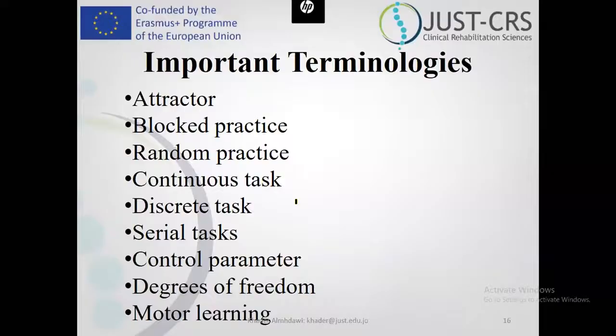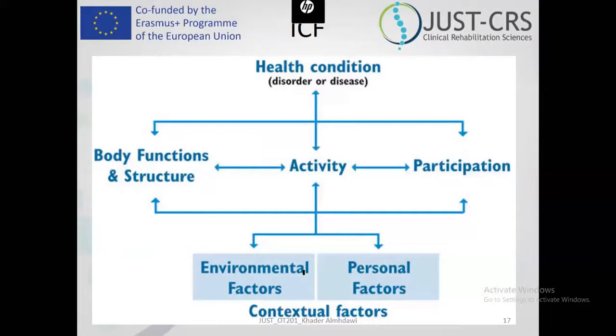Very important terms. An attractor is a variable related to the task — it could be related to the task itself, the environment, or the individual, like strength or range of motion. This is like a component of functional performance. We talked about blocked practice and random practice. A continuous task does not have a start and end. A discrete task has a start and end — like opening a door with a key. A serial task is a continuous task that does not stop. The ICF is very important for classification of functioning and disability.